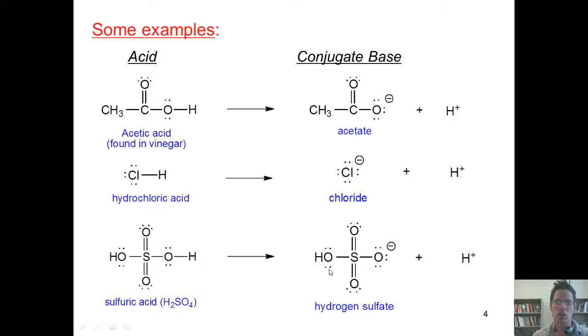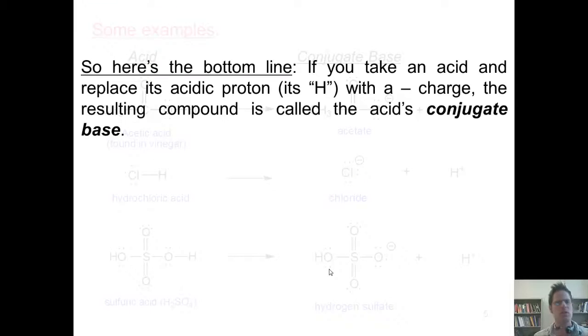So here's the bottom line. If you take an acid and replace its acidic proton, its acidic H, with a minus charge, the resulting compound is called the acid's conjugate base.